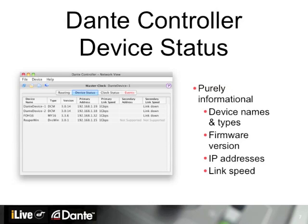The Device Status tab is really for information only, mainly when checking to see that a system is set up properly. In this tab, you can see your device names, Dante types, firmware versions, IP addresses for both primary and secondary links, and the speed of each link, such as 100 Mbps or Gigabit.